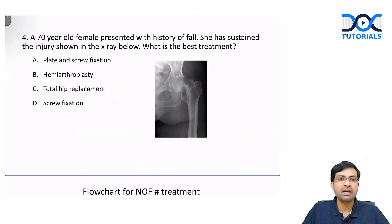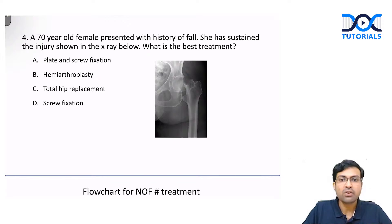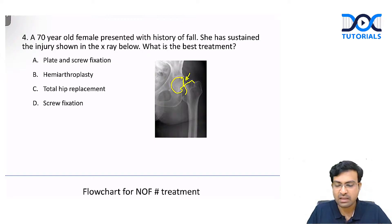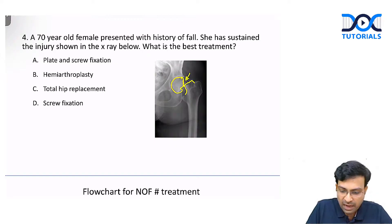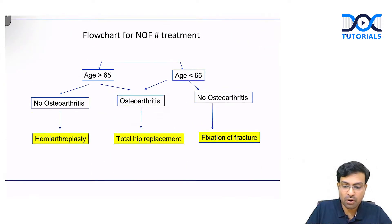Next question: a 70-year-old female presented with history of fall. The X-ray shows the femoral head completely separated from the neck — this is a fracture neck of femur. The treatment of fracture neck of femur depends on two things: the age of the patient and the presence or absence of osteoarthritis of the hip.